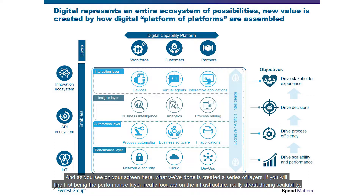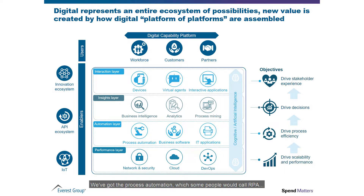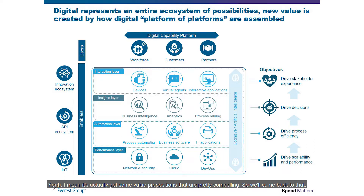As you see on your screen, we've created a series of layers. The first is the performance layer, really focused on the infrastructure, driving scalability and overall performance. Then we add in the automation layer, which is really about driving process efficiency. We have process automation — what some people would call RPA, or workflow, or scripting on steroids, or digital duct tape. Whatever you want to call it, it has some pretty compelling value propositions, so we'll come back to that.